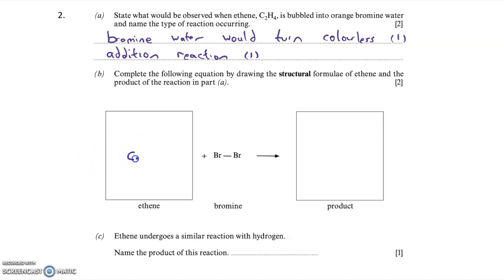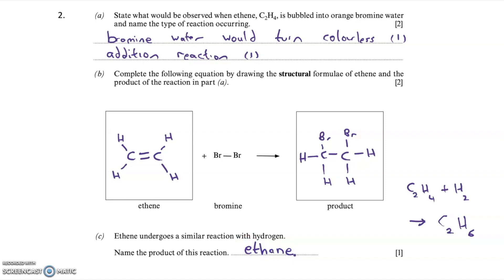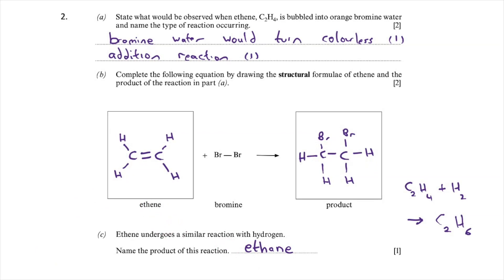In question B you're asked to draw the structural formula — sometimes called the displayed formula — of ethene. I'm drawing a molecule with a carbon-carbon double bond and four hydrogens. This reacts with bromine, Br2. In an addition reaction we break the carbon-carbon double bond; the bromine adds across the double bond, one bromine onto each carbon, resulting in C2H4Br2, called 1,2-dibromoethane — one mark for that and one mark for the structure of ethene. Part C states ethene undergoes a similar reaction with hydrogen: C2H4 plus H2 gives ethane, C2H6 — one mark.